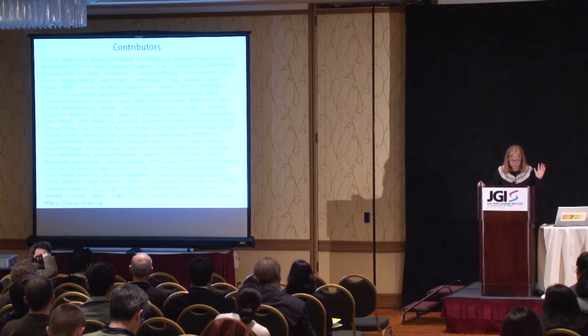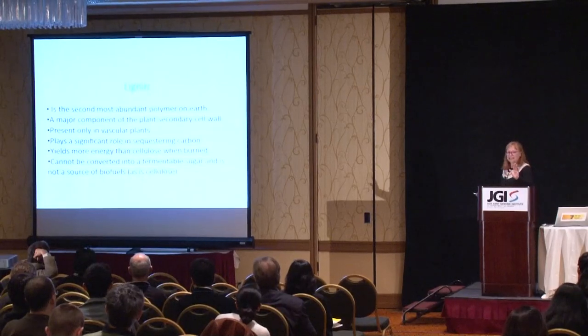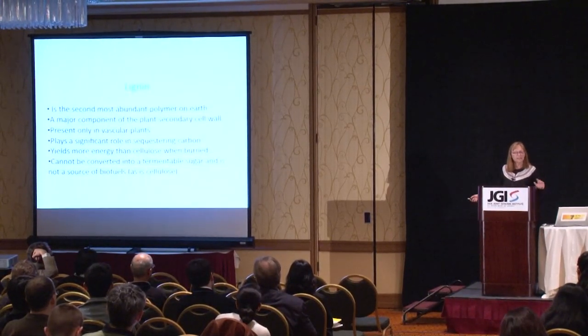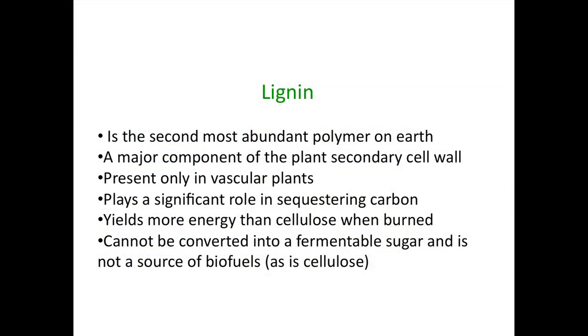There are a couple of other talks here about how to get rid of lignin — I'm going to talk about how to make lignin and how this pathway evolved. Lignin is the second most abundant polymer on Earth, second to cellulose which is used for biofuels. It is a major component of the plant secondary cell wall, present only in vascular plants. It plays a very significant role in sequestering carbon. It yields more energy than cellulose when burned, but it cannot be converted into fermentable sugars, so it's not a good source of biofuels.